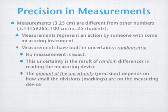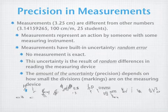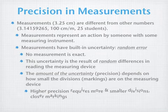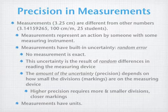This amount of uncertainty is the precision, and it depends on how small the divisions or markings are on the measuring device. Higher precision requires more and smaller divisions, which means the markings are going to be closer together. One very important point for this class: all measurements must have units with them.